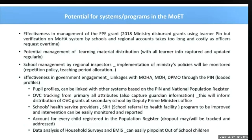Pupils can be linked with other systems based on their PIN and National Population Register. OVC tracking from primary school, including guardian attributes, will inform distribution of OVC grants at secondary schools by the Deputy Prime Minister's offices. Schools' health service providers and the SRH program will be improved, and interventions can be easily monitored and reported. Dropout will be tracked and addressed, and data analysis of household surveys and EMIS can easily pinpoint out-of-school children.